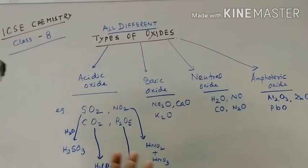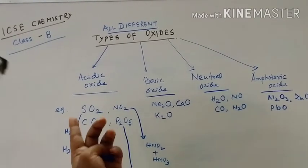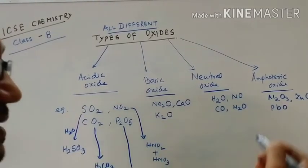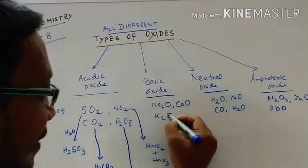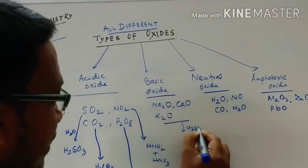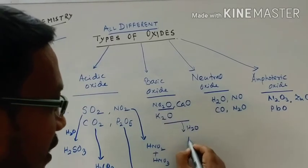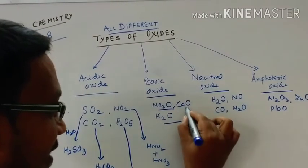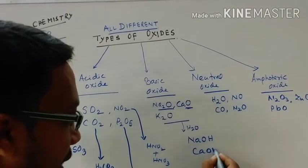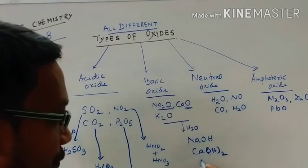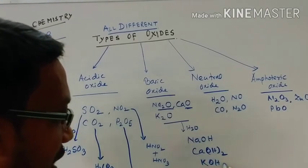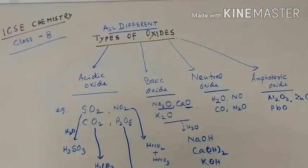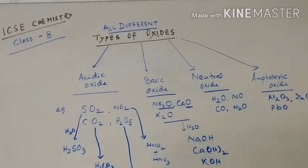Basic oxides produce bases. Sodium oxide reacts with water to produce NaOH, that is sodium hydroxide. Calcium oxide reacts with water to produce calcium hydroxide. Potassium oxide produces potassium hydroxide. These are the reasons why these oxides are called basic oxides.